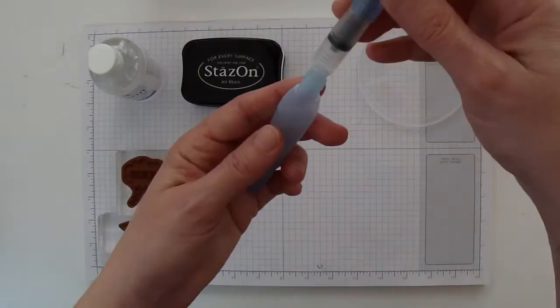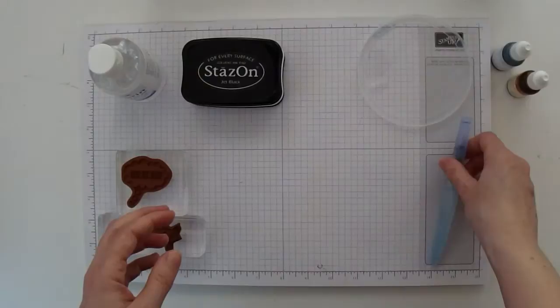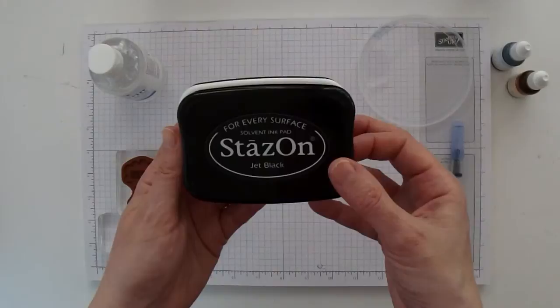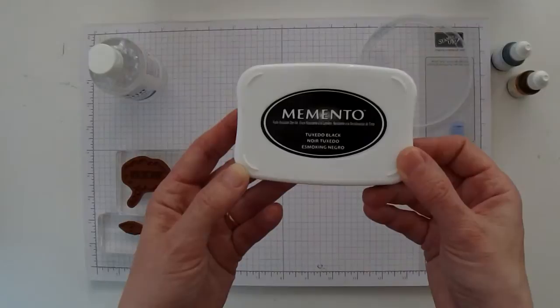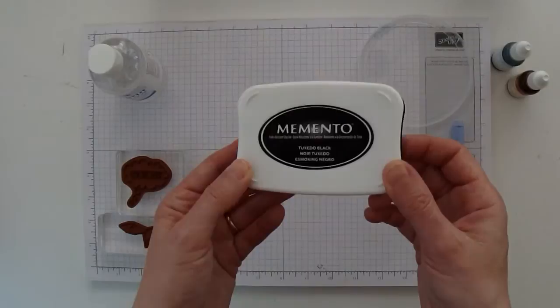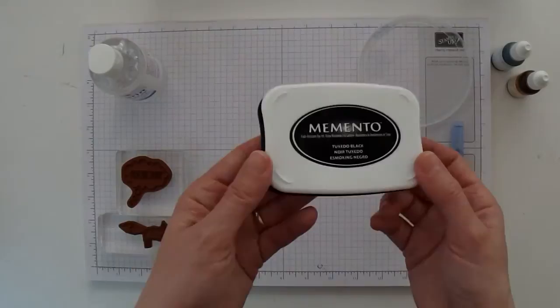For ink we're going to use, you can either use Stazon, which is waterproof ink. My favorite black ink is actually memento ink and you can use this method with memento. You just have to be a bit careful. If you find that you get too much bleeding going on with the memento, then just go ahead and use the Stazon.